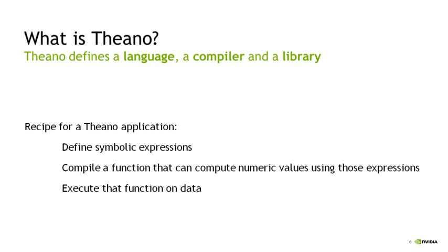Theano actually gives you three things in the Python library. There's a language — a syntax for defining symbolic variables, symbolic expressions, and functions built from those expressions. There's a compiler, which takes those symbolic expressions and variables and compiles them into code that can be run on the CPU or GPU. And then there is a library of functions you can use within the language to make it easier and more concise to define symbolic expressions. For example, if you're building a convolutional neural network, there's a convolution function, and for any neural network, there are various activation functions you can call upon from the library.